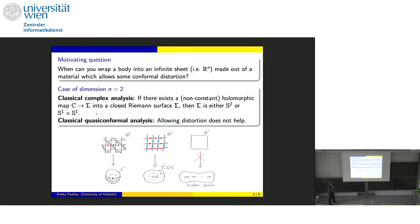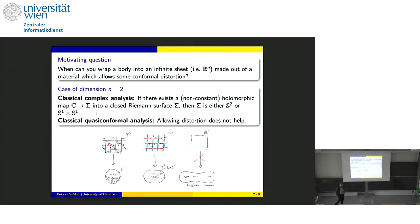The funny thing is that there is no distortion in the classical complex analysis result — it's a conformal map — but even if you allow distortion, it doesn't help you. If you put a bounded distortion, like what Yanni did, there is no change in the number of possible targets.